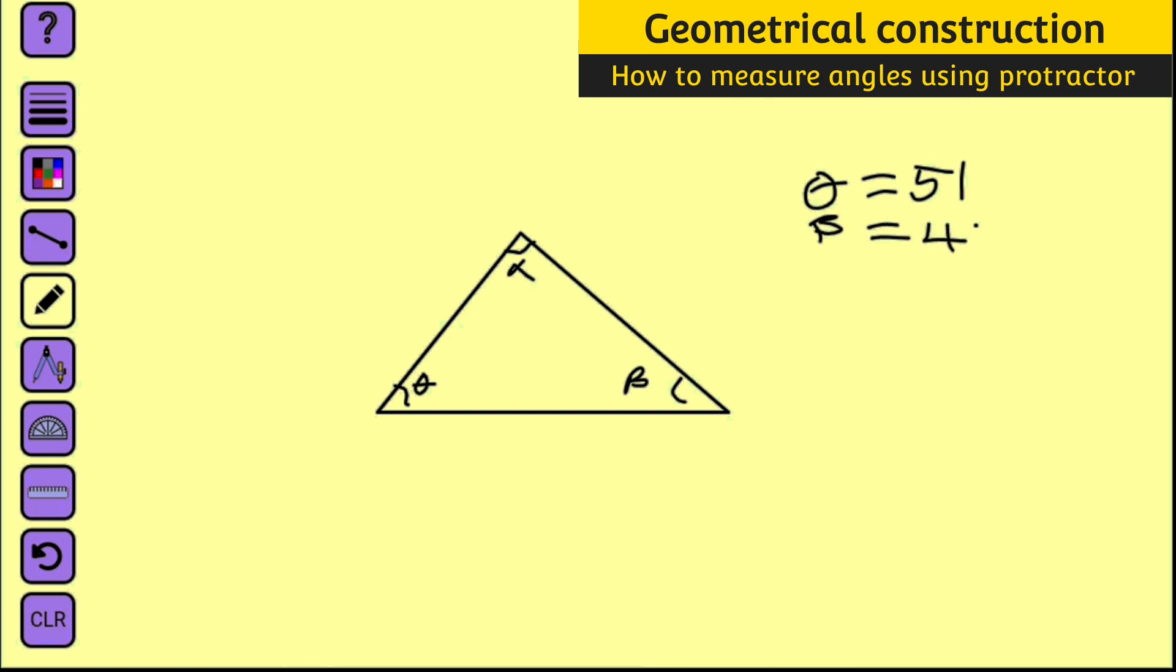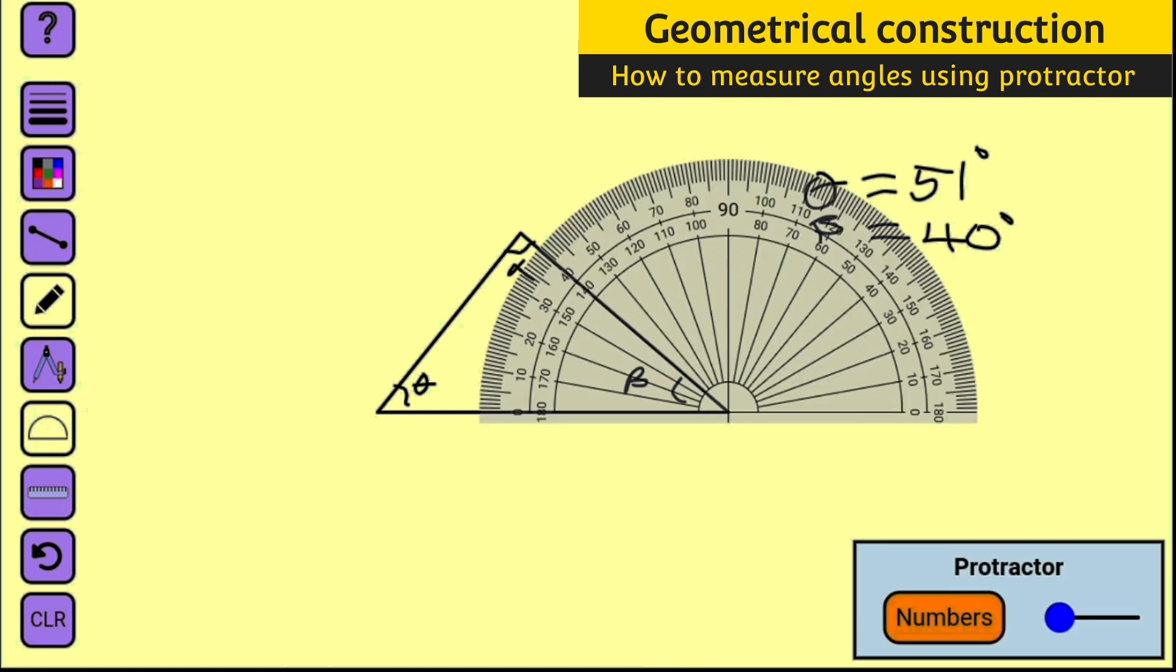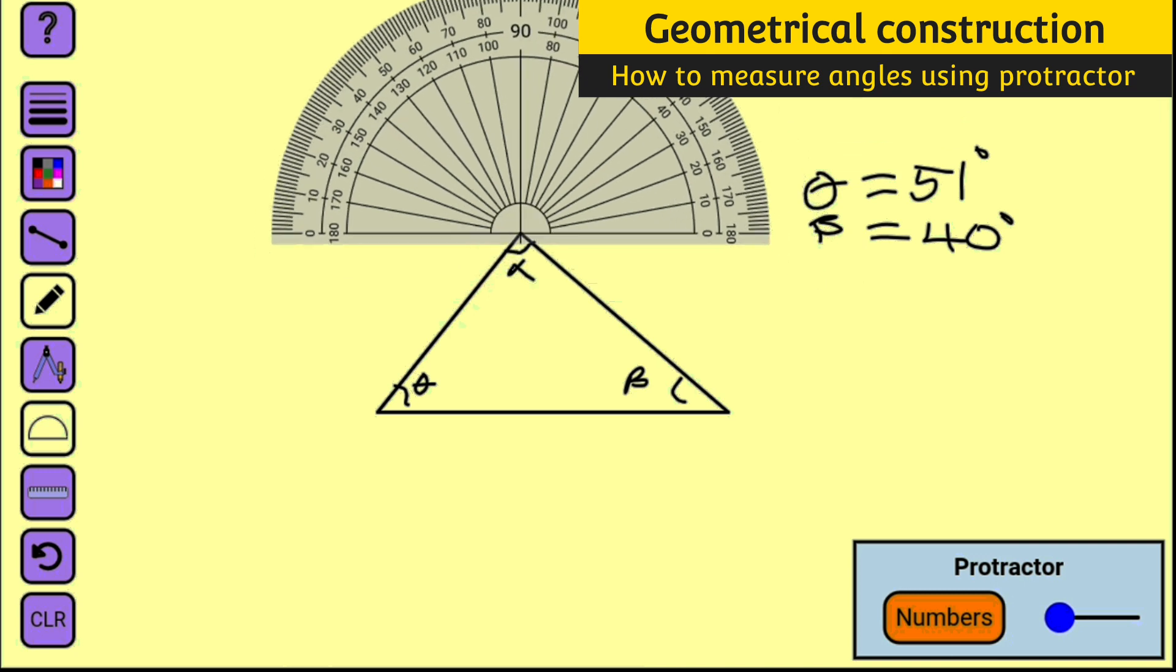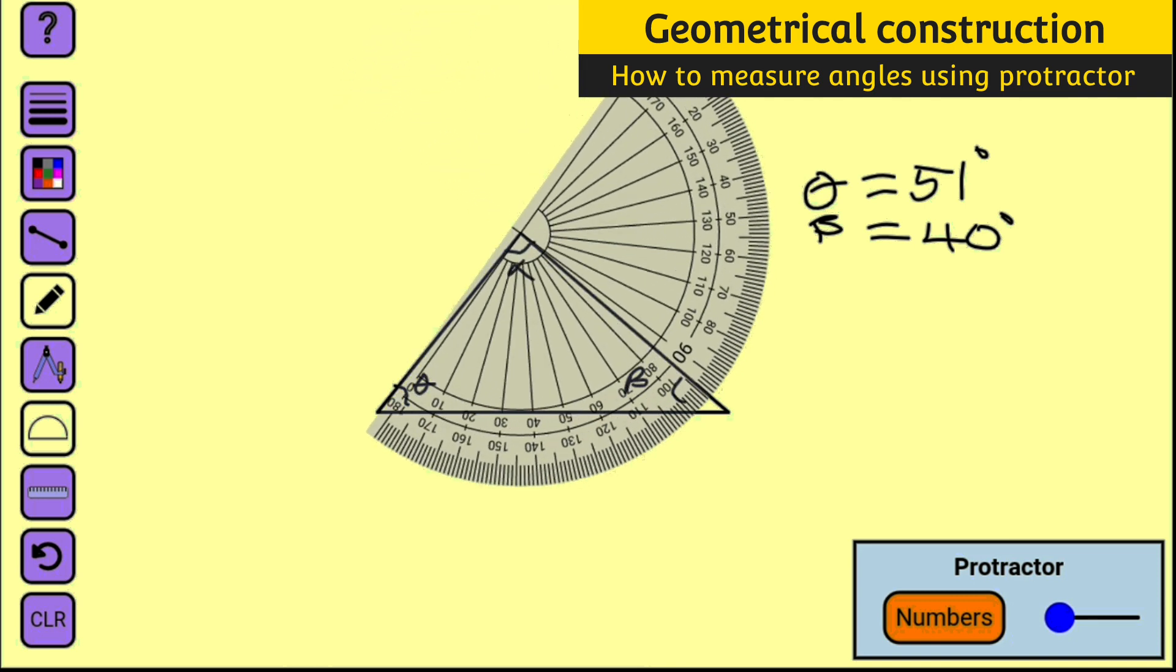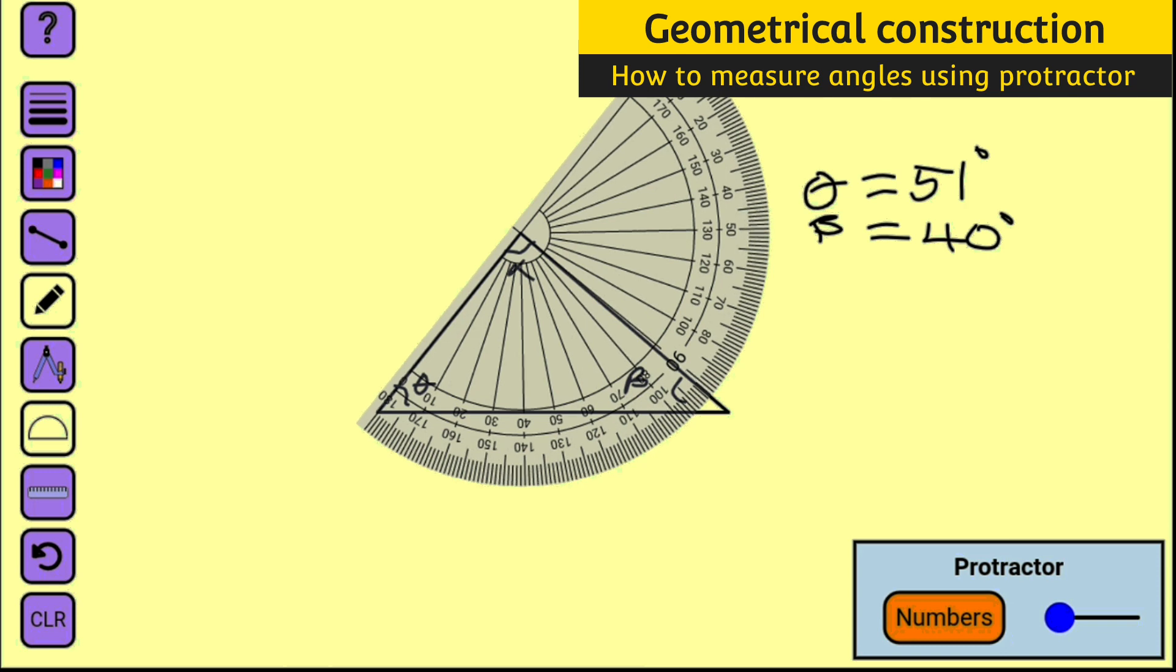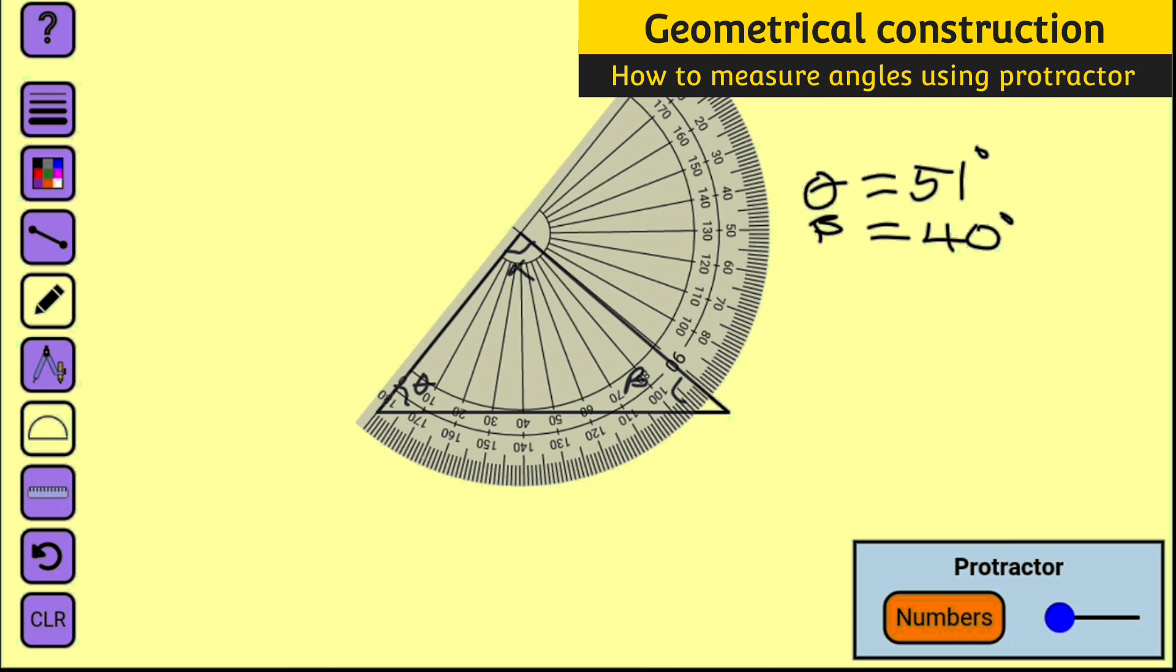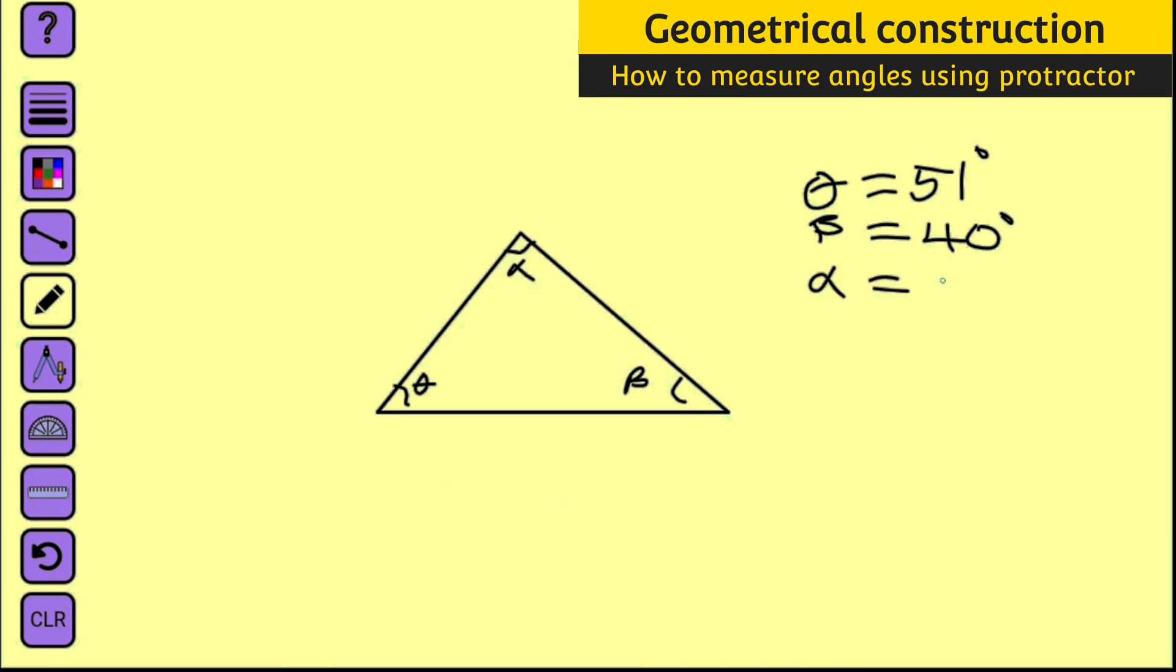Beta is 40 degrees. Then let us measure the last one. Let me bring it here, let me swap it like this. So now let us measure that. This is 10, 20, 30, 40, 50, 60, 70, 80, 89. You see it remains one for it to complete 90. Alpha is equal to 89.